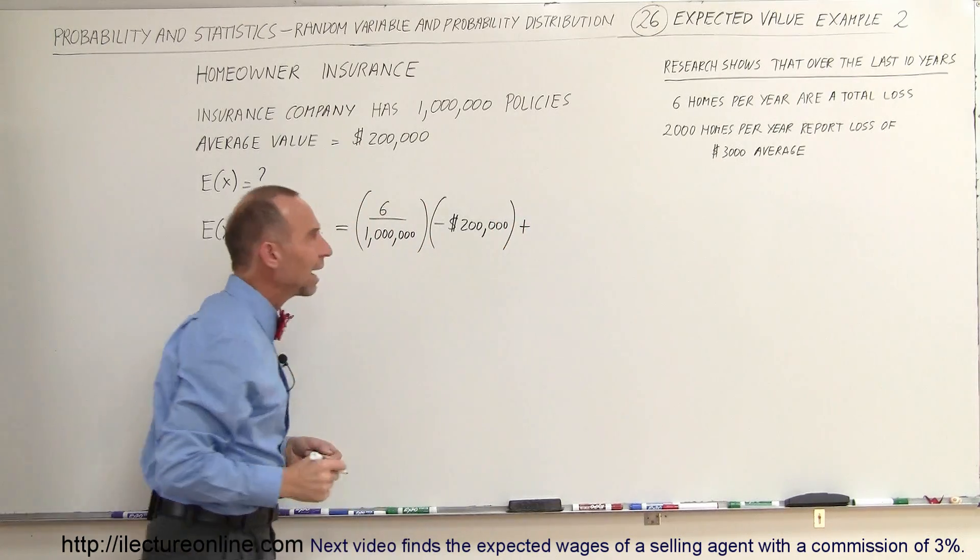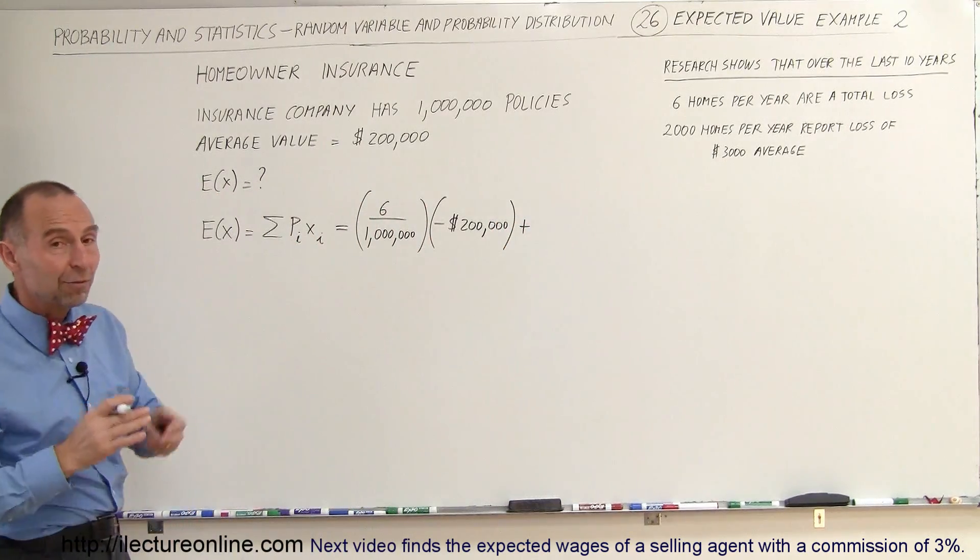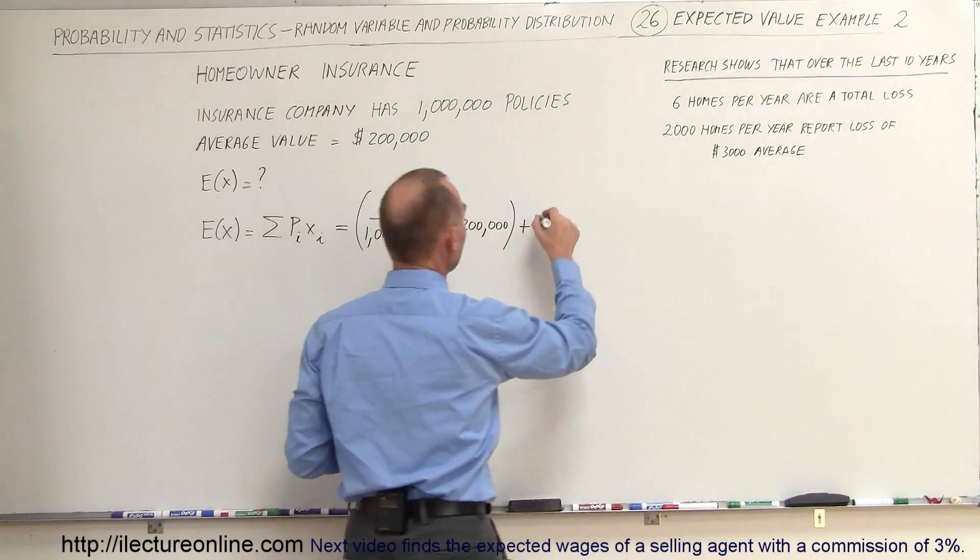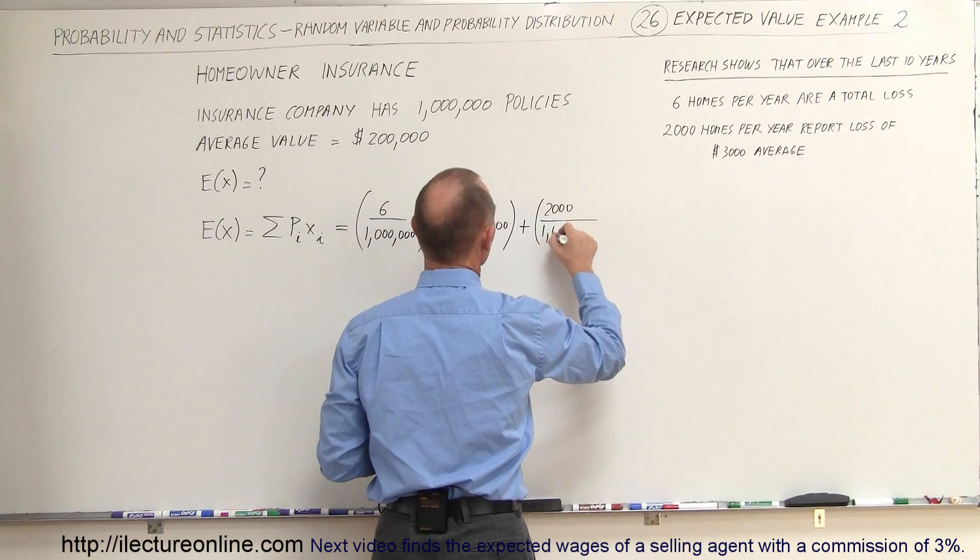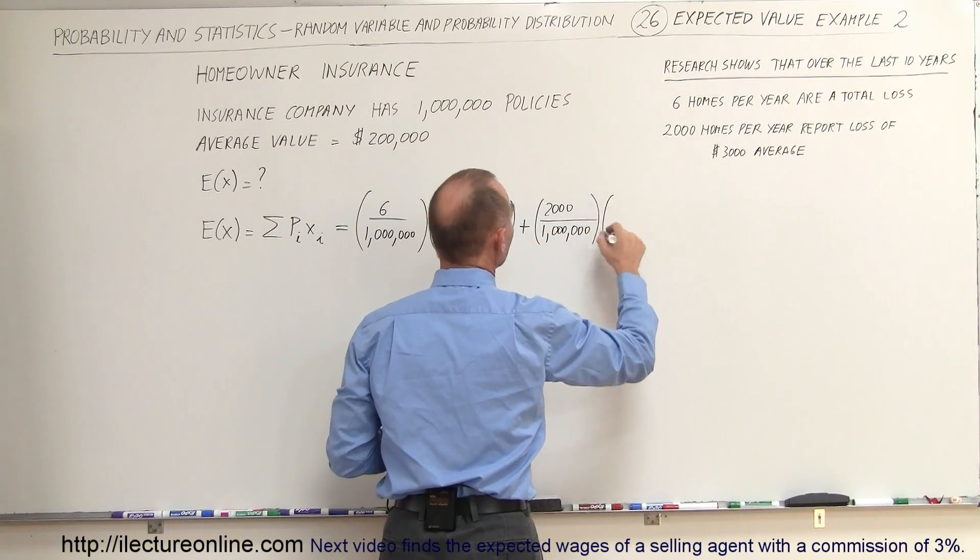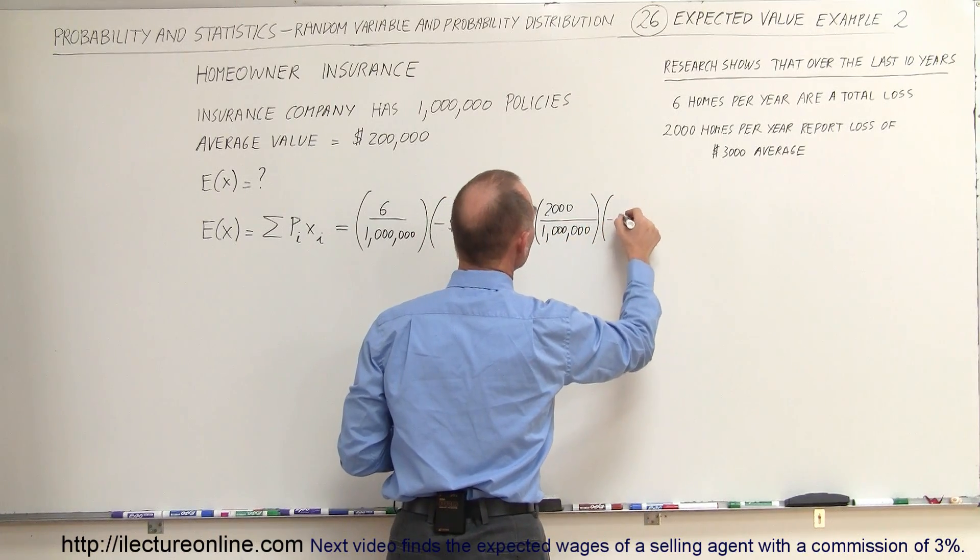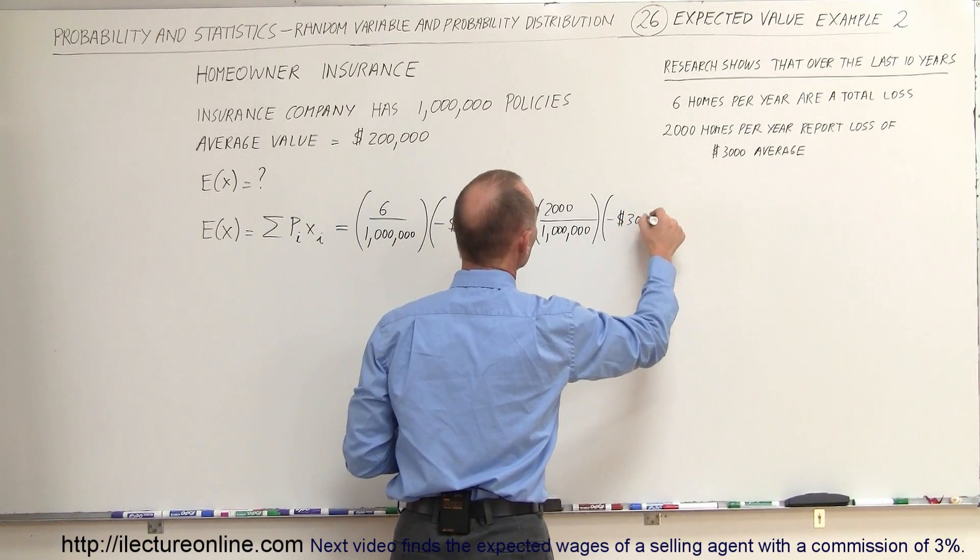Plus, now we have a probability of 2,000 out of a million that damages would have to be paid. So that would be 2,000 out of 1 million, and the loss on average would be $3,000, so that's a minus to the company.